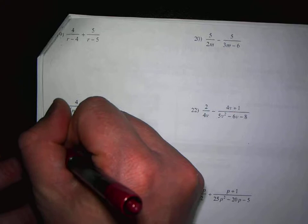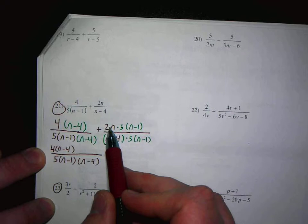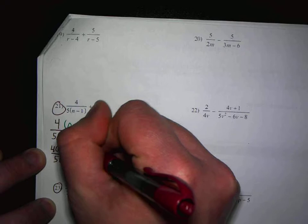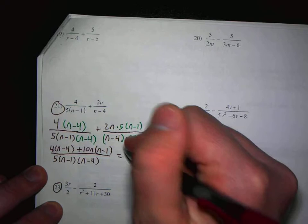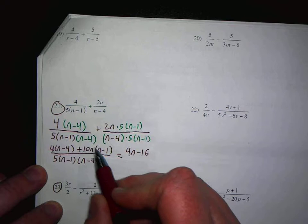Plus, now I can go ahead and multiply 2n times 5. 2n times 5 is 10n(n minus 1). Now I'm going to distribute. So that would be 4n minus 16, and that would be 10n squared minus 10n.